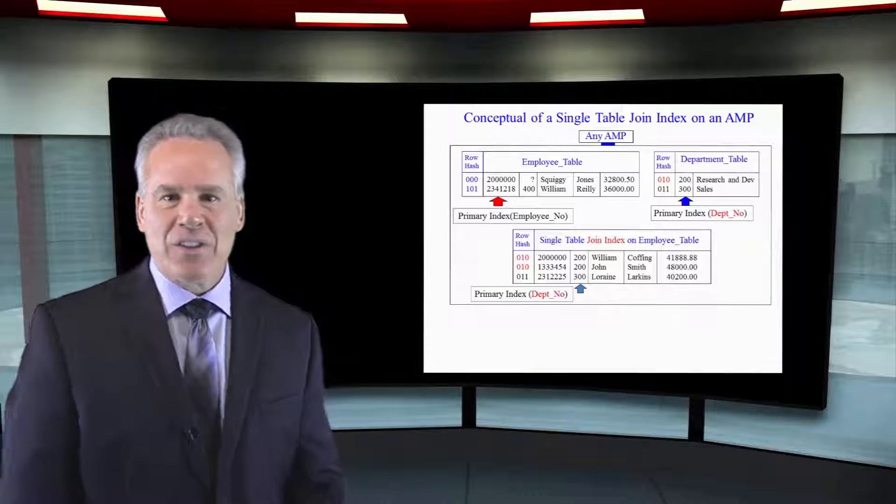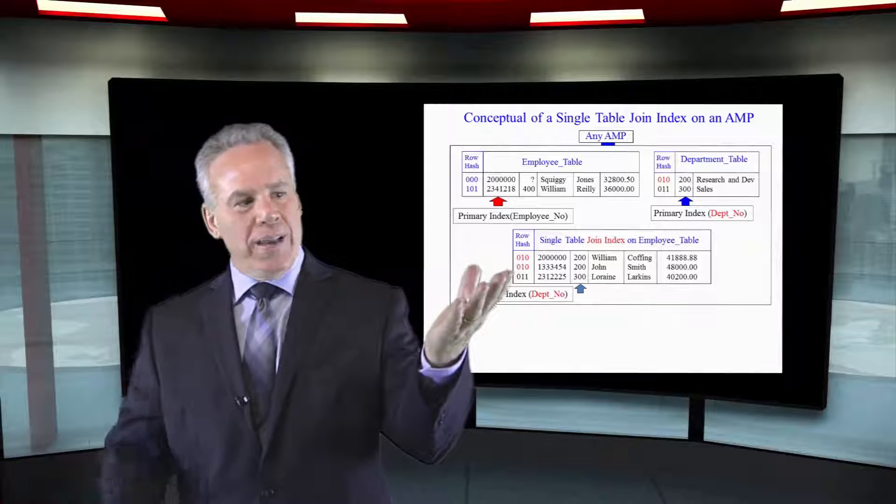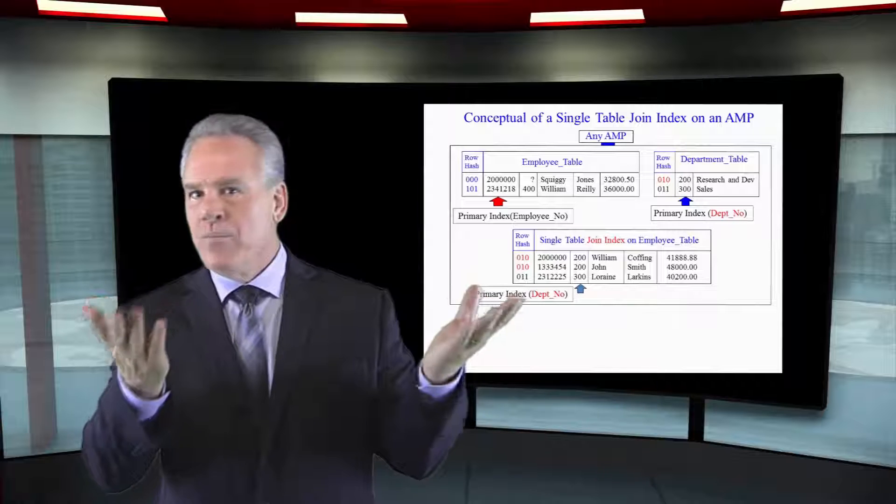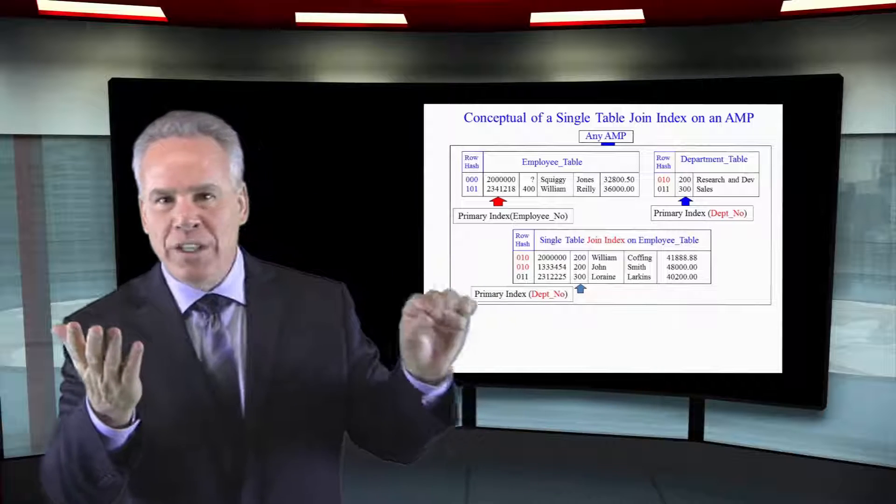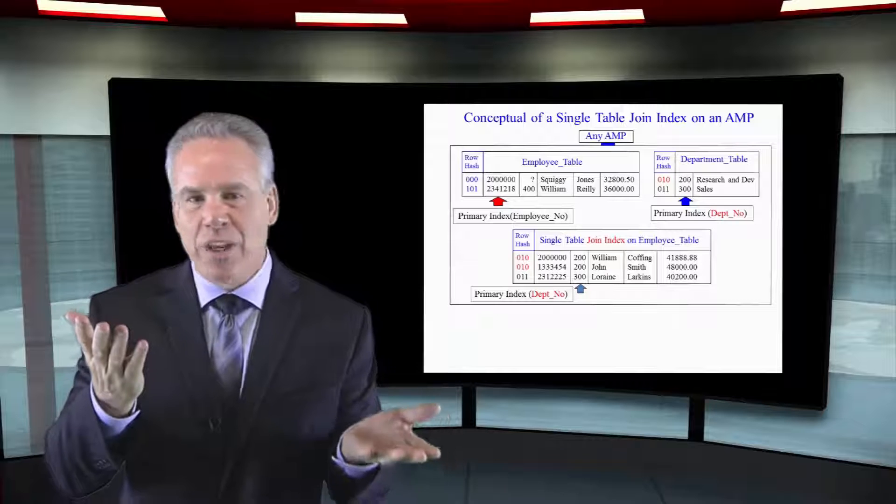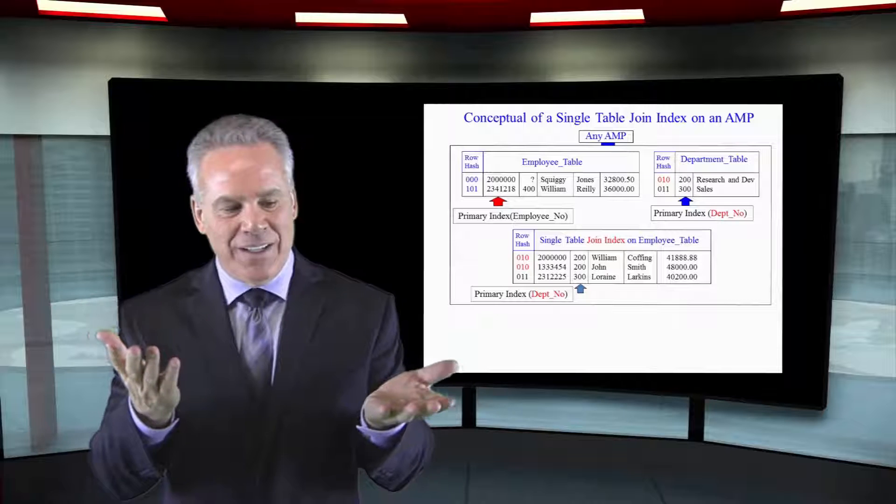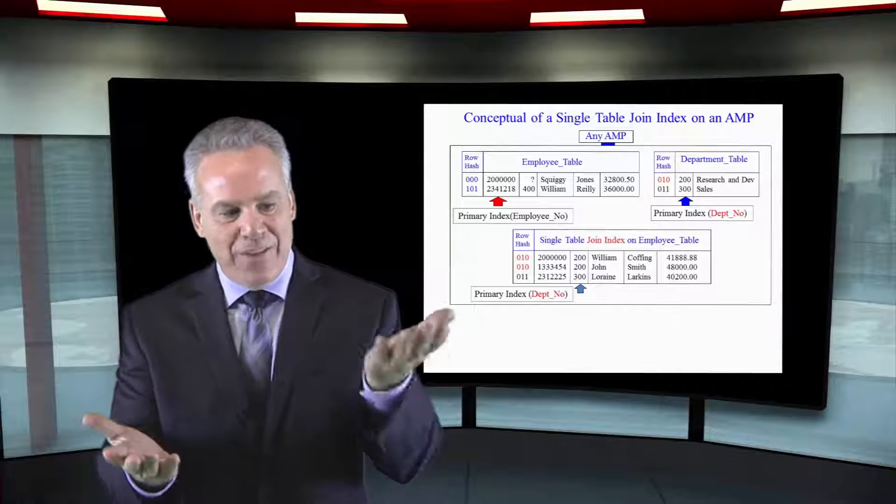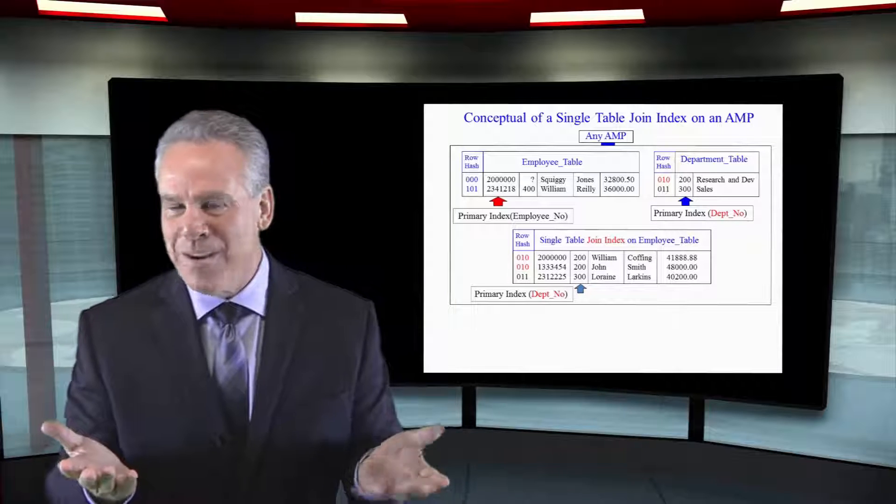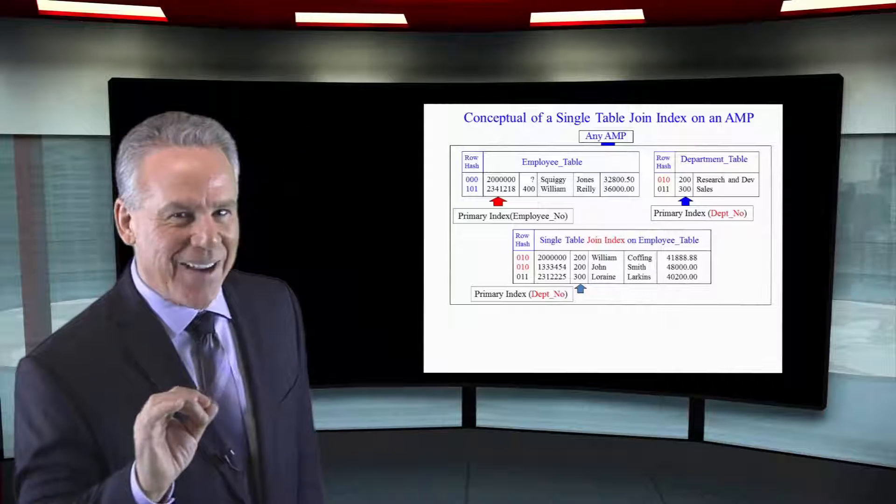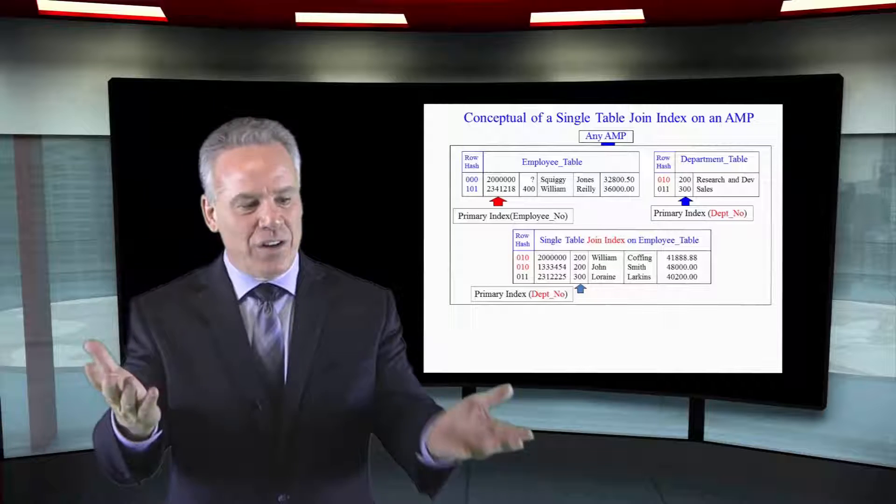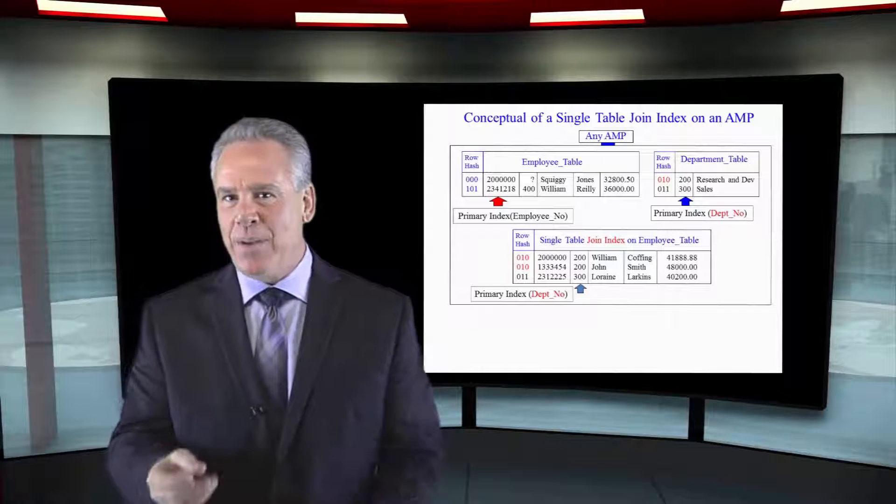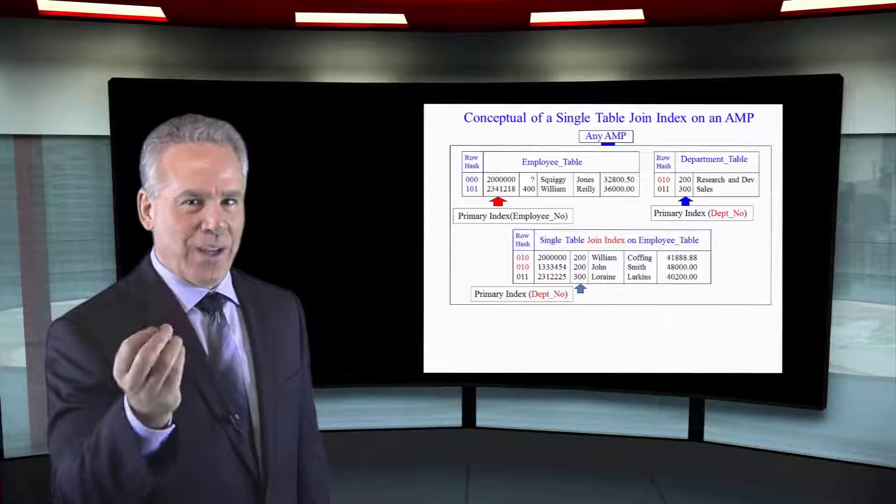And if someone says, I would like to join the employee table to the department table, the parsing engine says, hold on a second, don't use the employee table. Use the join index because now both primary indexes from department table and the join index are department number and we're joining on department number. And so, there's going to be no data movement. The join is going to happen extremely quickly.